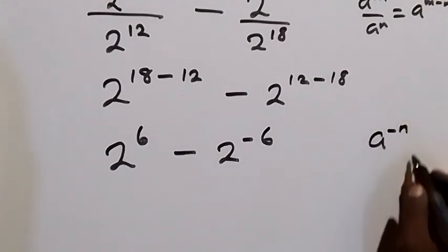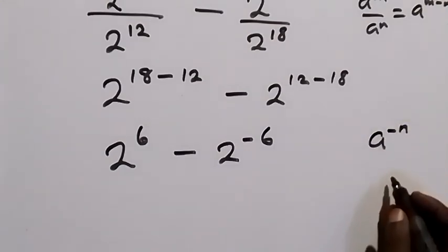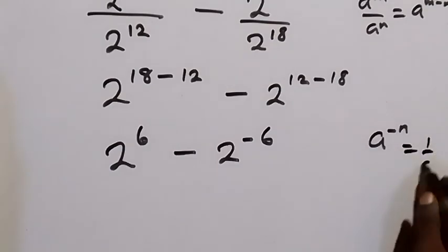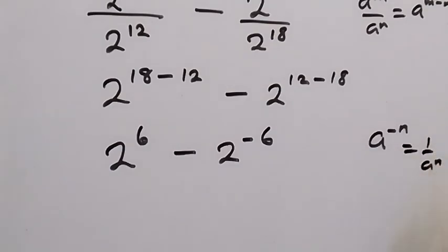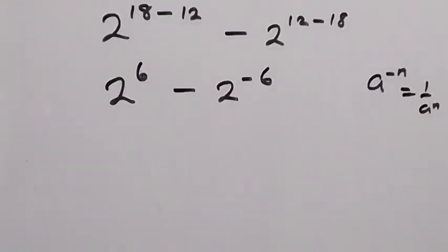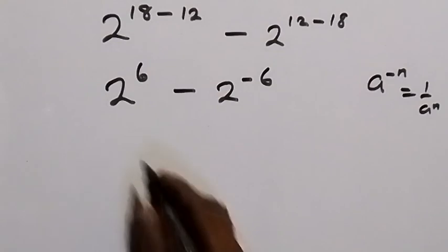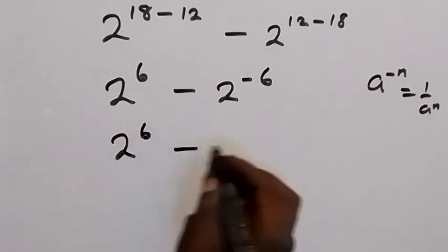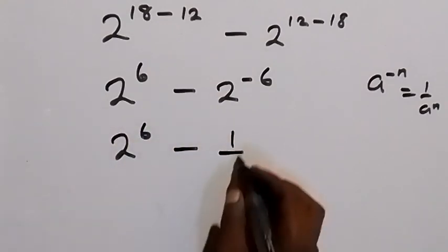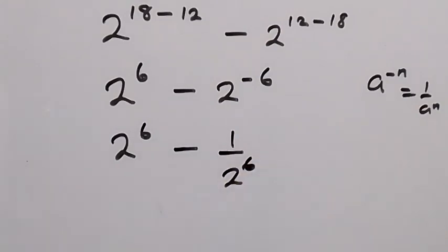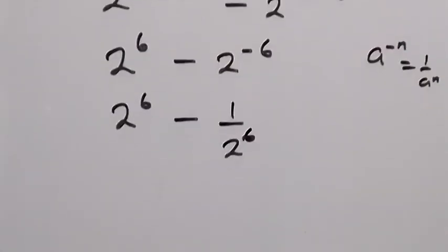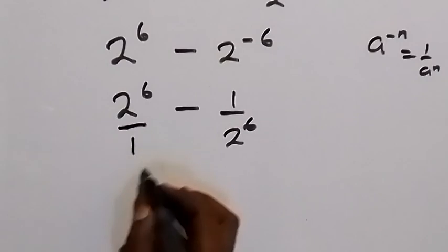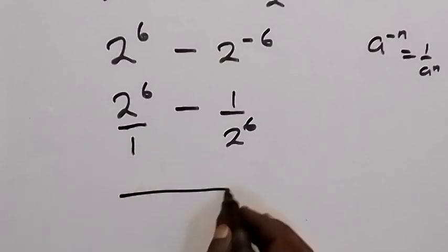On this side, where we have a raised to power negative n, we can write this as 1 over a raised to power n. So when we apply that, this becomes 2 raised to power 6 minus 1 over 2 raised to power 6. From here, the LCM is 2 raised to power 6.